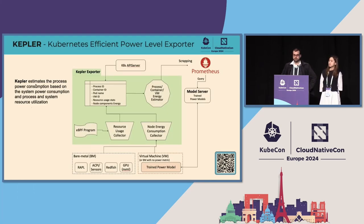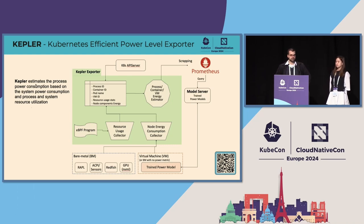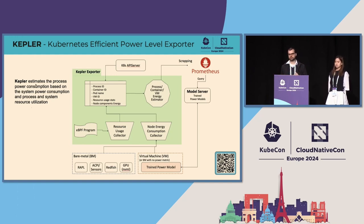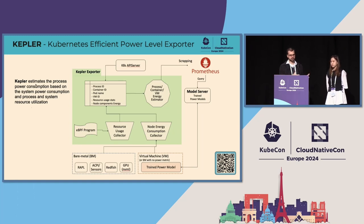What's Kepler? Kepler is a project to measure the energy consumption of processes, and then aggregate it to containers, pods, and other granularities. There is no way to measure the energy consumption of processes directly from the hardware — there are no counters for that. But we have the energy consumption of components, for example, CPU energy consumption, and that energy consumption is directly related to resource utilization. So by having the resource utilization of processes and the energy consumption of components, we calculate the proportional energy used by each specific process.